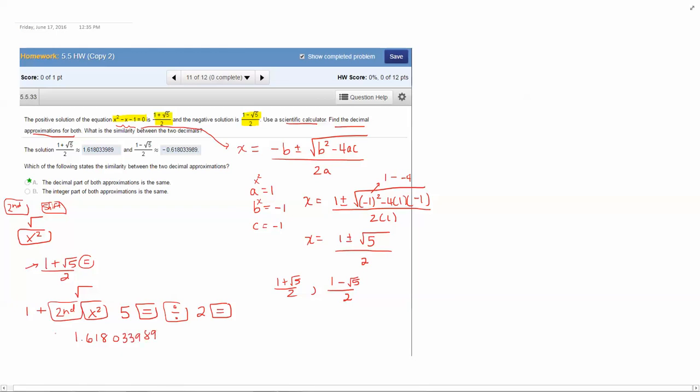Okay, so now if we look at the next one which is 1 minus the square root of 5 divided by 2, we're going to type that in the calculator now. So again we start on top. We type 1 minus second x squared, that gets the square root, 5, and then press equals, and then do divided by 2 equals. And so this is going to give you the decimal negative 0.618033989.